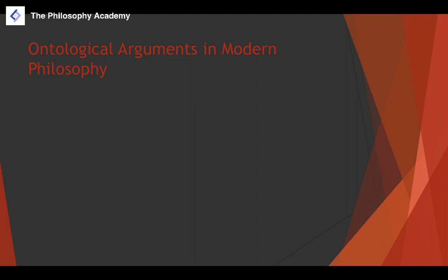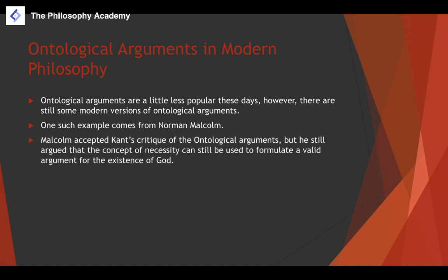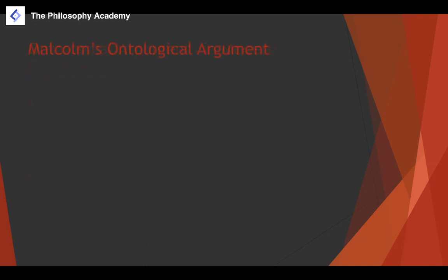Ontological arguments didn't disappear after Kant, but they've been less popular and lacked the same impact. One modern version comes from Norman Malcolm. Malcolm accepted Kant's critique, but still argued that the concept of necessity can be used to formulate a valid argument for the existence of God.